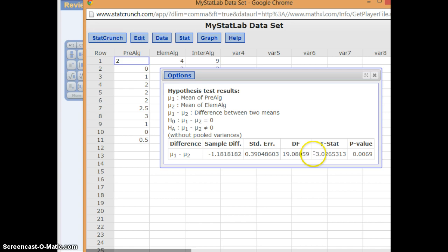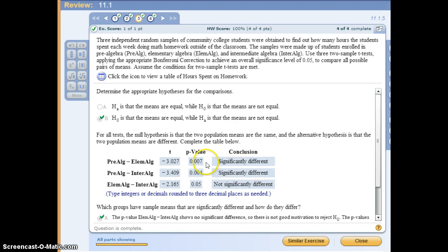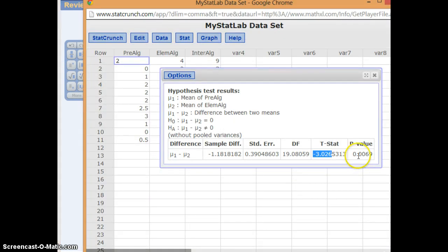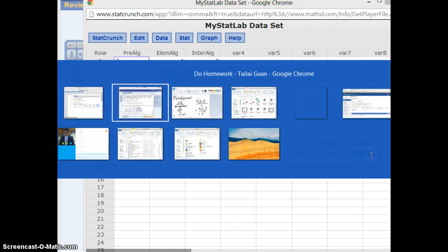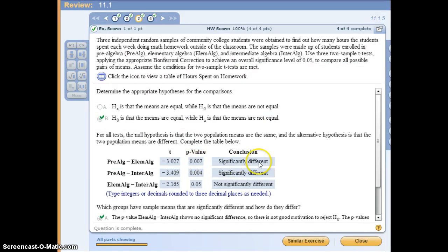You get negative 3.0265, which rounds to this t-value. The p-value would be 0.0069, which rounds to 0.007. We draw the conclusion that it is significantly different, because it's lower than 0.0167.